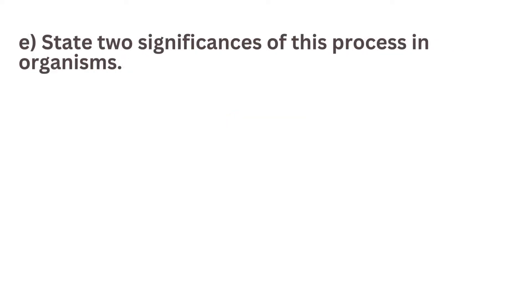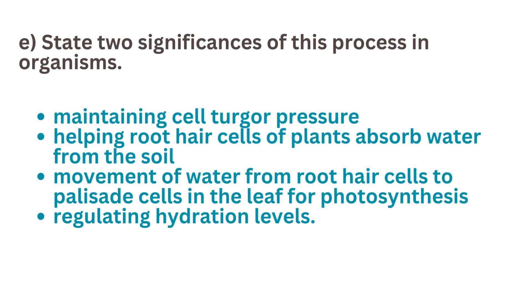E. State two significances of this process in organisms. Significances of osmosis in organisms include maintaining cell turgor pressure, helping root hair cells of plants absorb water from the soil, movement of water from root hair cells to palisade cells in the leaf for photosynthesis, and regulating hydration levels.